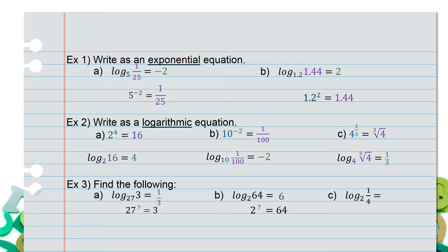For part c, we have log base 2 of 1/4. That means 2 raised to some power equals 1/4. Since it is in fraction form, it means it will be a negative exponent, which is a reciprocal. Because 4 is the same thing as 2 squared, it will be a power of negative 2.